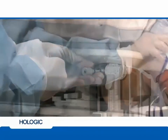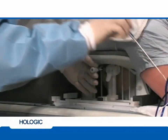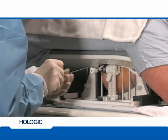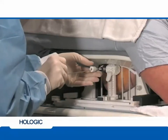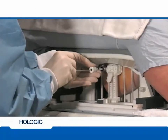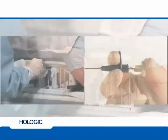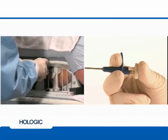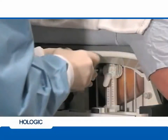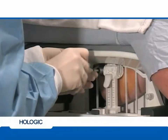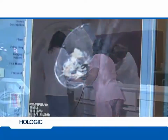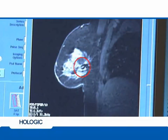Remove the localizing obturator and place the marker deployment device into the introducer sheath until the aperture indicator contacts the introducer sheath hub. To make sure this position is maintained throughout the deployment of the marker, hold the device in place with your free hand. Deploy the marker by pressing the plunger with your thumb — an audible and tactile click will confirm deployment. Slowly remove the deployment device from the introducer sheath. Shuttle the patient into the magnet bore for verification of marker placement. Once marker placement is verified, shuttle the patient back out of the magnet bore.